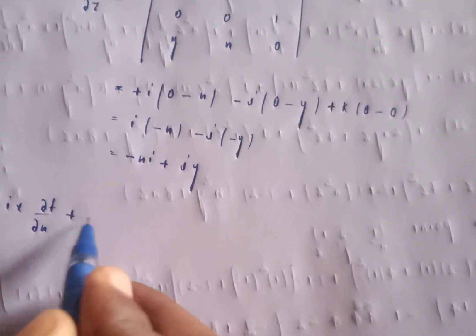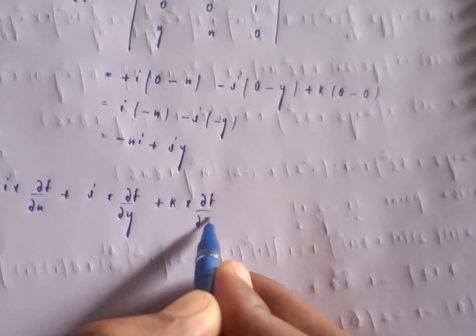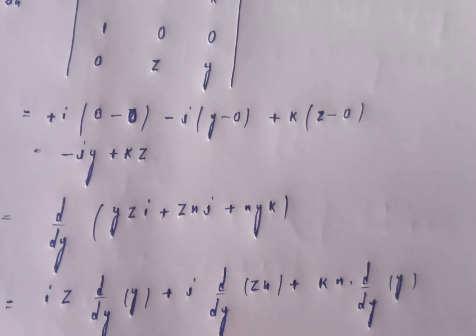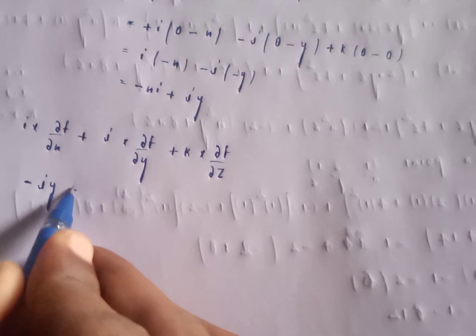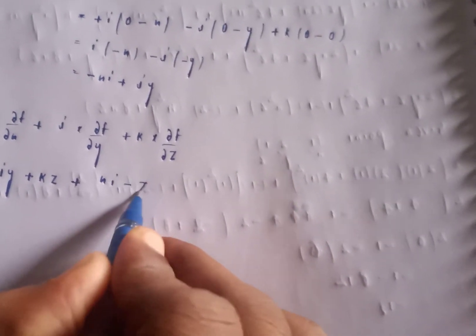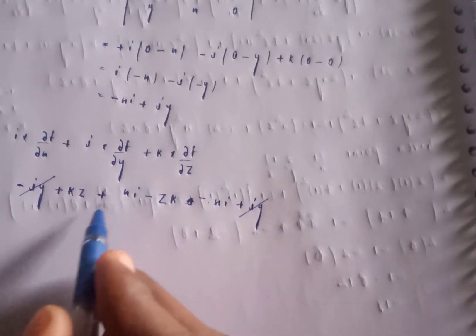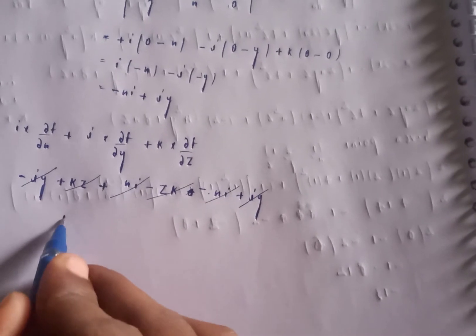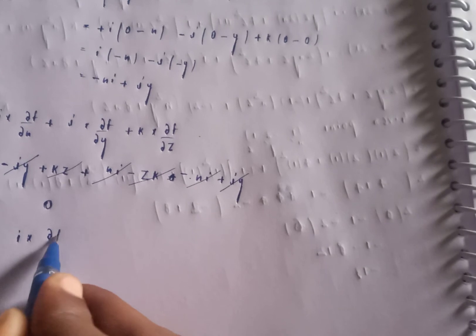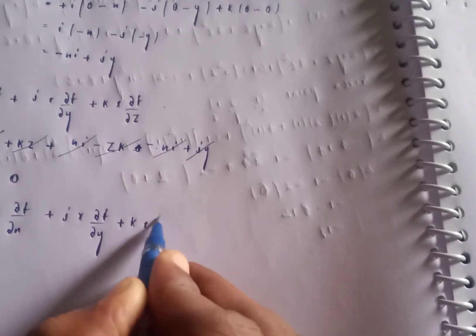Now add all three results together. i cross ∂f/∂x gives minus jy plus kz. j cross ∂f/∂y gives xi minus zk. k cross ∂f/∂z gives minus xi plus jy. Adding: xi minus xi equals zero, minus jy plus jy equals zero, kz minus zk equals zero. So the total is zero. Therefore i cross ∂f/∂x plus j cross ∂f/∂y plus k cross ∂f/∂z equals zero. Proved.